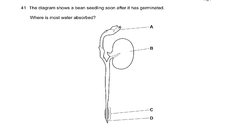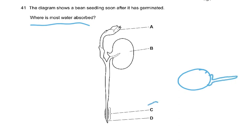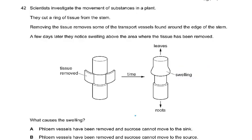The first question: the diagram shows a bean seedling soon after it has germinated — where is most water absorbed? It can't be A, that's the shoot. B is the cotyledon. D is the internal core of the root. The answer is C because water is absorbed into the root hair cell and then moves into the root.